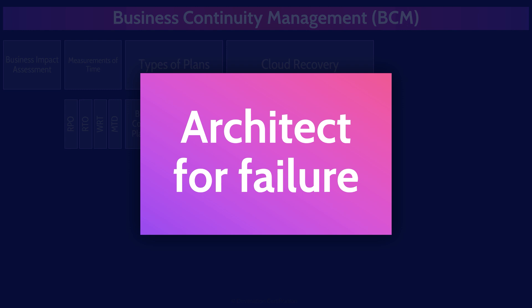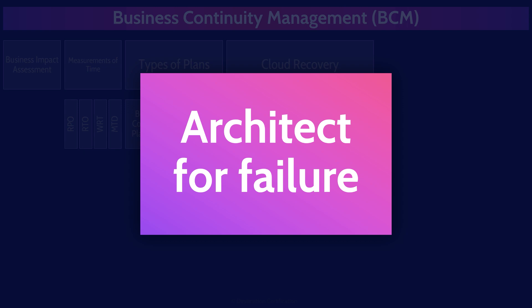It's important to recognize that failures are going to happen, so it's important to design architectures to handle failures gracefully — we need to architect for failure. Some of the most common techniques include using cloud services with multiple availability zones, having backup services that are geographically remote, and having automatic failovers in place. This is the whole idea of architecting for failure.